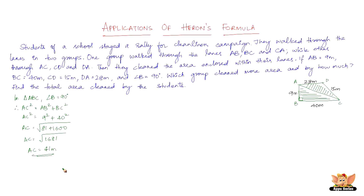Now let's compute the area of triangle ABC. Now that we've got all three sides, we can use either Heron's formula or the usual formula, half into base into height. Area of triangle ABC equals half into 40 into 9, which gives us 180 square meters.